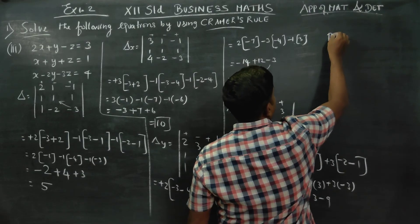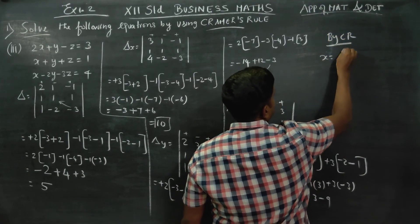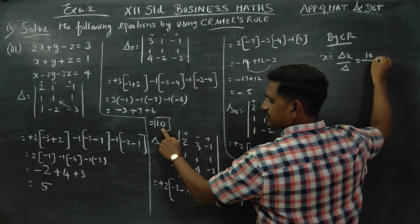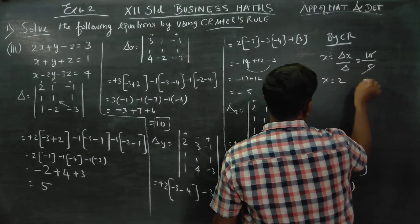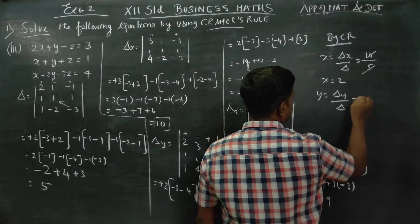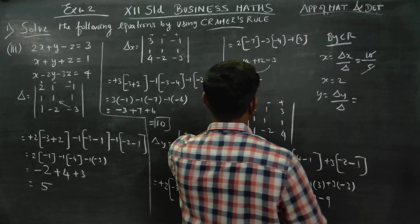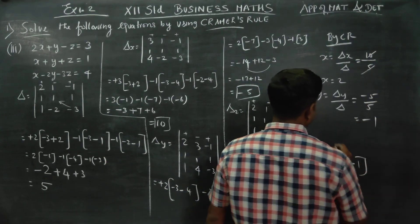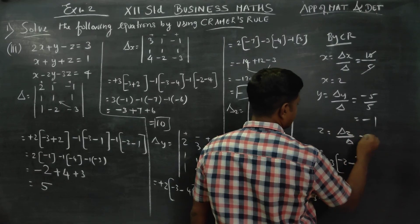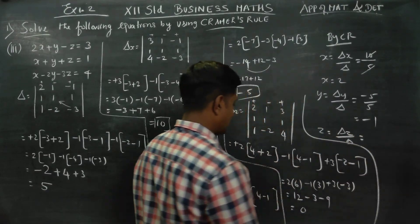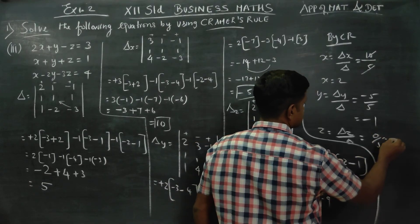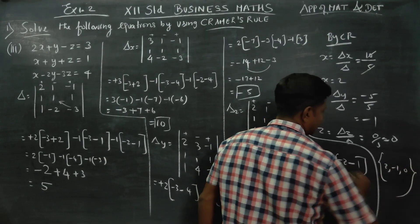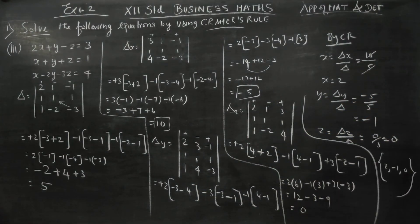Final answer by Cramer's rule: x is equal to delta x by delta — delta x is 10, delta is 5, so x equals 2. y is equal to delta y by delta — delta y is minus 5, divided by delta 5, so y equals minus 1. Finally, z is equal to delta z by delta — delta z is 0, so 0 by 5 equals 0. Therefore, my solution set is (2, minus 1, 0). Thank you.